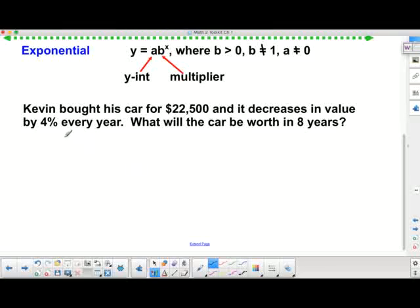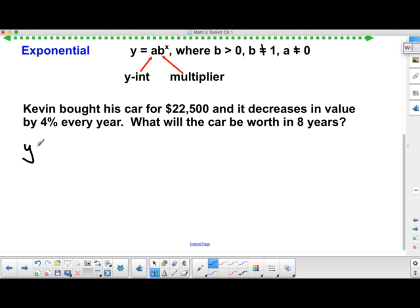So I'm going to go ahead and write out the equation, and we'll talk about why it is what it is in a moment here. So I'm going to write y equals, a is our start point. That would be 22,500.